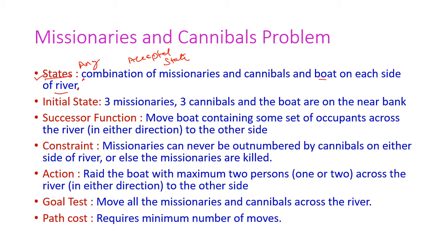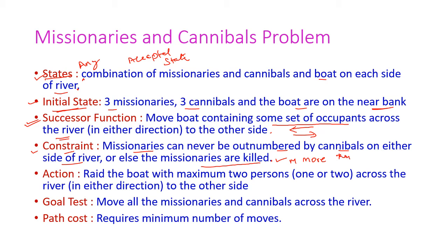The initial state is three missionaries, three cannibals, and the boat on one side of the bank. The successor function is to move the boat containing some set of occupants across the river in either direction. The constraint is that missionaries can never be outnumbered by cannibals on either side of the river, otherwise the missionaries are killed. So missionaries must always be greater than or equal to cannibals.